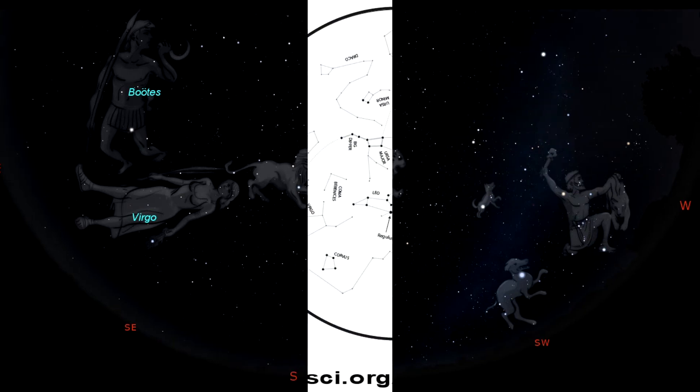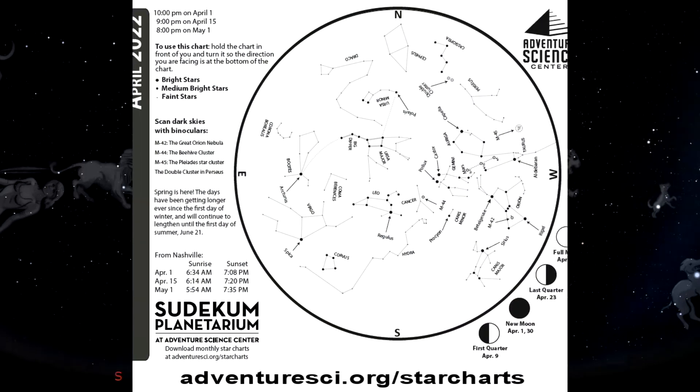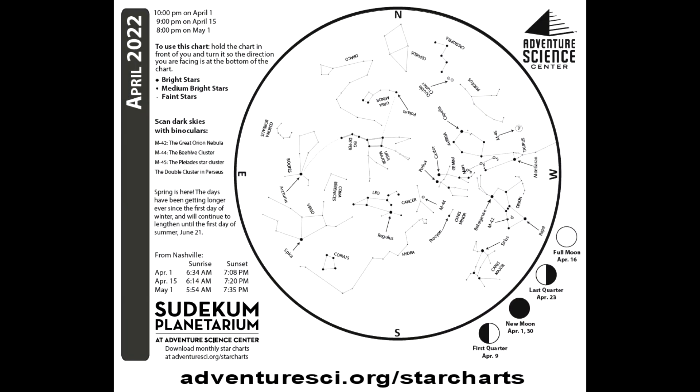Now, if you can't remember everything I've mentioned in this online edition of Nightwatch, you can grab a copy of our online star chart at adventuresci.org/starcharts. You can also find out other information not contained in this online edition of Nightwatch.